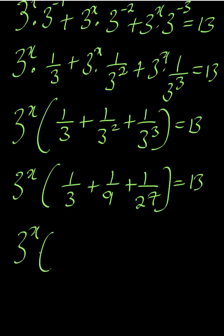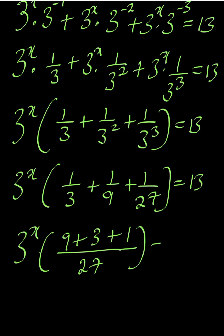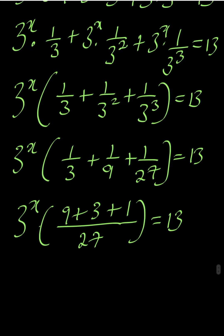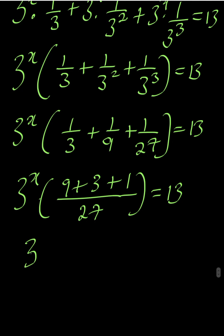Their lowest common multiple is 27. 27 divided by 3 is 9, times 1 is 9; plus 27 divided by 9 is 3, times 1 is 3; plus 27 divided by 27 is 1, times 1 is 1. So we have 3 to the power of x multiplied by 9 plus 3 plus 1, which is 13 over 27, equal to 13.